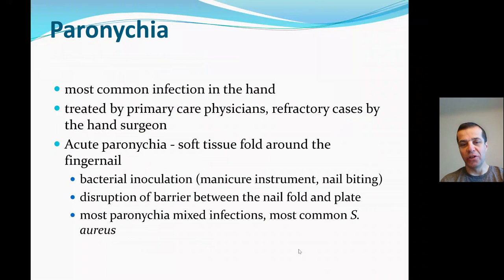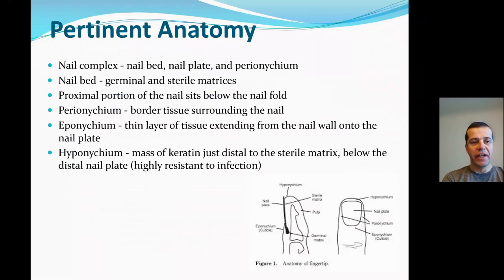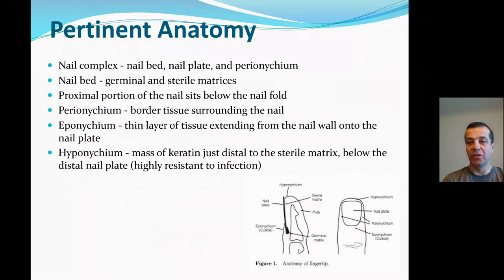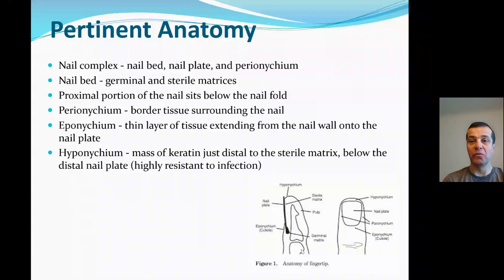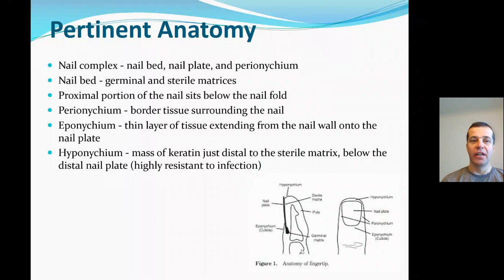It's important to know the anatomy of the nail complex, which includes the nail bed, the nail plate, and the perionychium. The nail bed is composed of the germinal matrix and sterile matrix. The proximal portion of the nail plate sits below the nail fold. The perionychium is the border tissue surrounding the nail on three sides. The hyponychium is a thin layer of soft tissue extending from the nail wall onto the nail plate — essentially the mass of keratin distal to the sterile matrix, right over the fingertip below the distal nail plate.